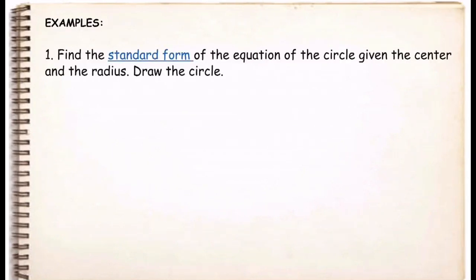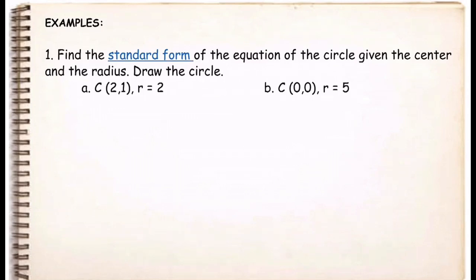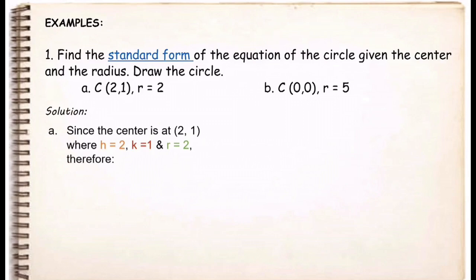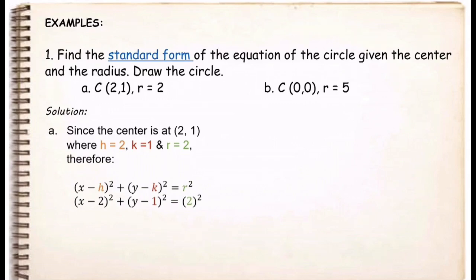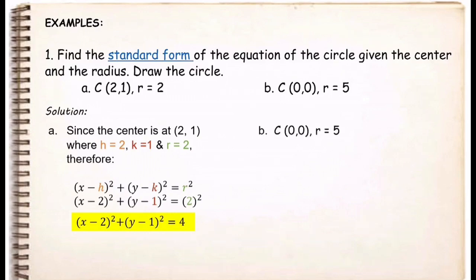Now let us work on some examples. Example number one: find the standard form of the equation of the circle given the center and the radius, and draw the circle. Letter A: the center is at (2, 1) with r = 2. Letter B: the center is at the origin with r = 5. For letter A, since the center is at (2, 1) where h = 2 and k = 1 with radius 2, we use the equation (x minus h)² plus (y minus k)² = r².